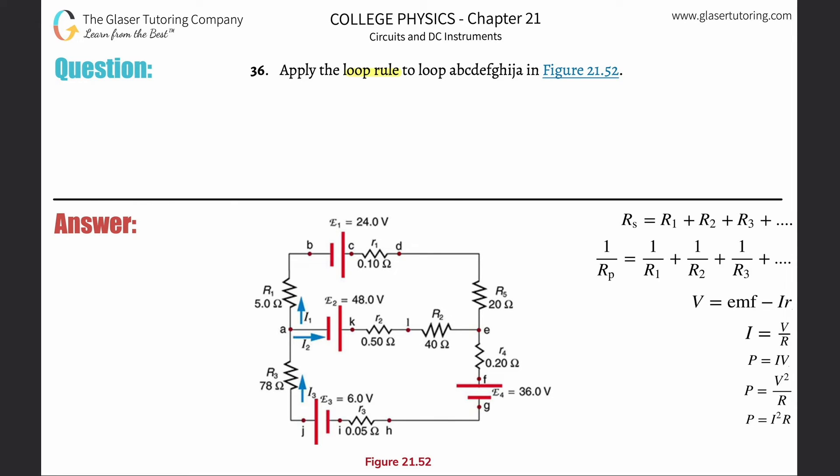Number 36: apply the loop rule to loop ABCDEFGHIJA in Figure 21.52. First check out numbers 31 and 32 where I went through a detailed analysis of the loop rule. In this one I'm going to go a little faster, so if you need it explained in more detail, check those out.